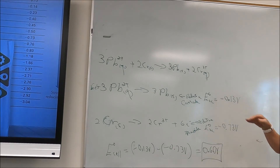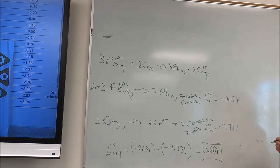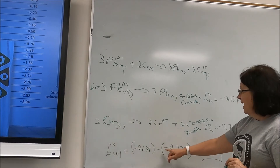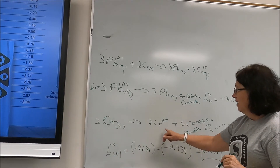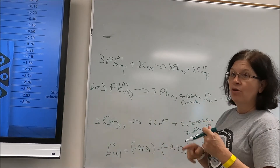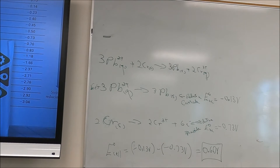The E°anode and E°cathode values are taken straight off the table. Remember the negative sign is there because we reverse the anode reaction compared to how it's written on the table.